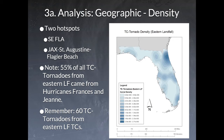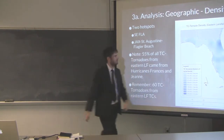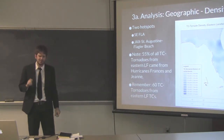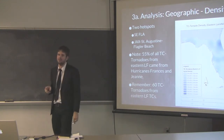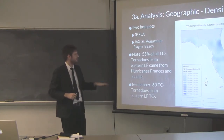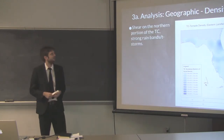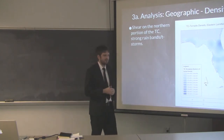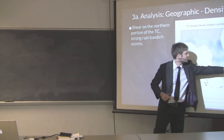Breaking down eastern landfalls, we have two hotspots: a significant cluster in northeast Florida south of Jacksonville around St. Augustine and Flagler Beach, and some in urbanized southeast Florida, with a corridor from Pasco-Hernando County east toward Melbourne. However, 55% of all eastern landfall events came from just two tropical cyclones — Frances and Jeanne — which made landfall roughly at the same location three weeks apart in 2004. So the data is heavily weighted to those two events. Storm-centric analysis suggests the shear on the northern portion of the TC and strong rainbands are likely the causes.